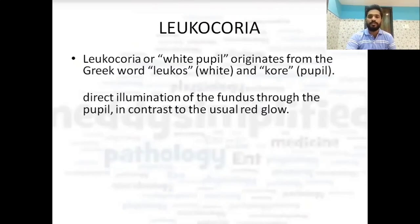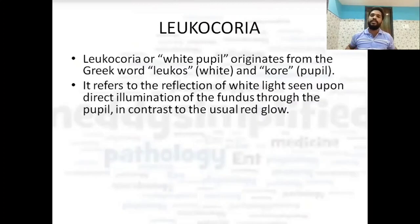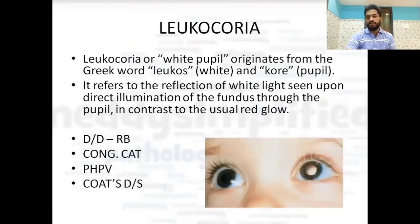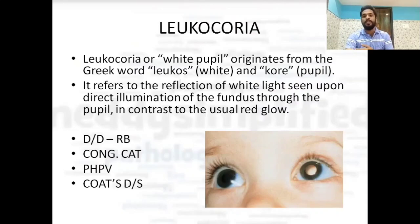Leukocoria means white pupil — from the Greek leukos (white) and kore (pupil). It refers to a white light reflection upon direct illumination of the fundus through the pupil, in contrast to the usual red glow. Differential diagnoses for leukocoria include retinoblastoma, congenital cataract, PHPV (persistent hyperplastic primary vitreous), Coats' disease, and retinopathy of prematurity.